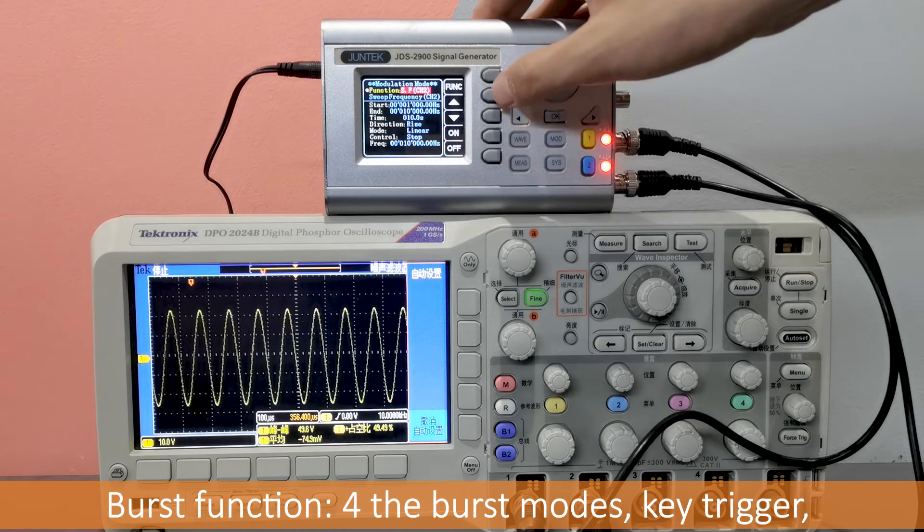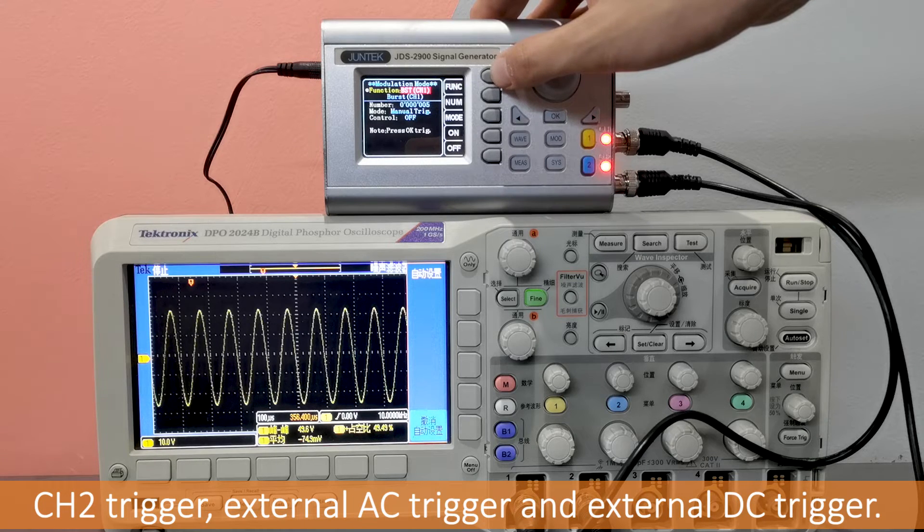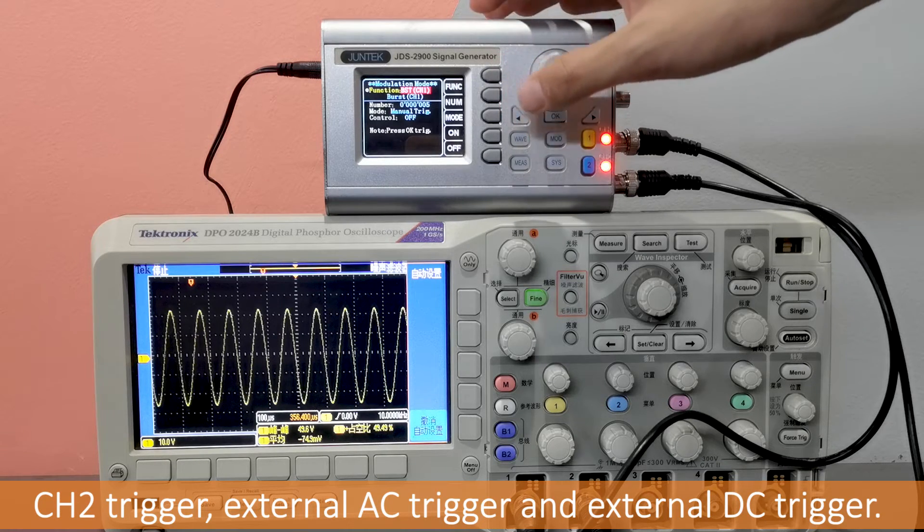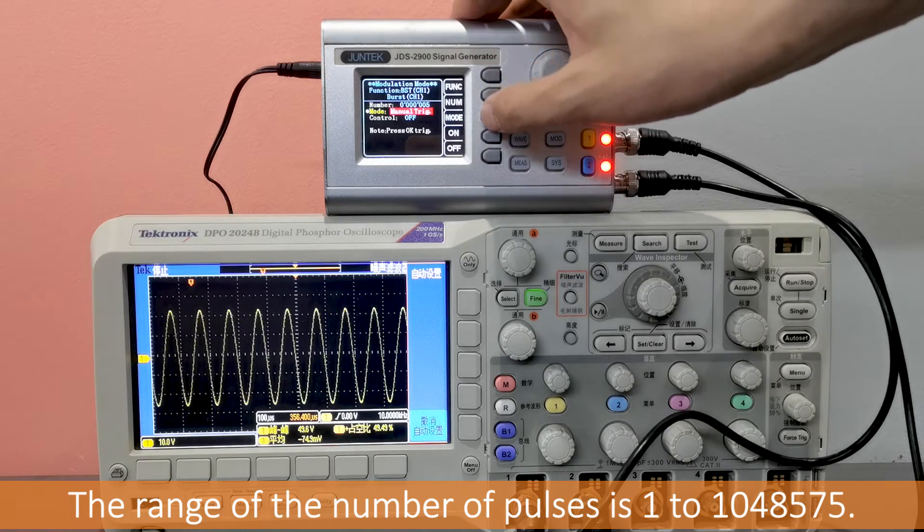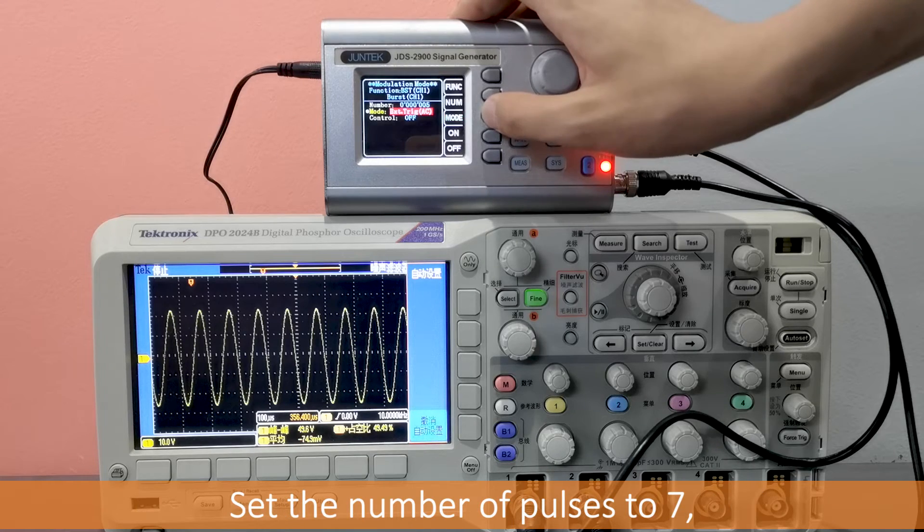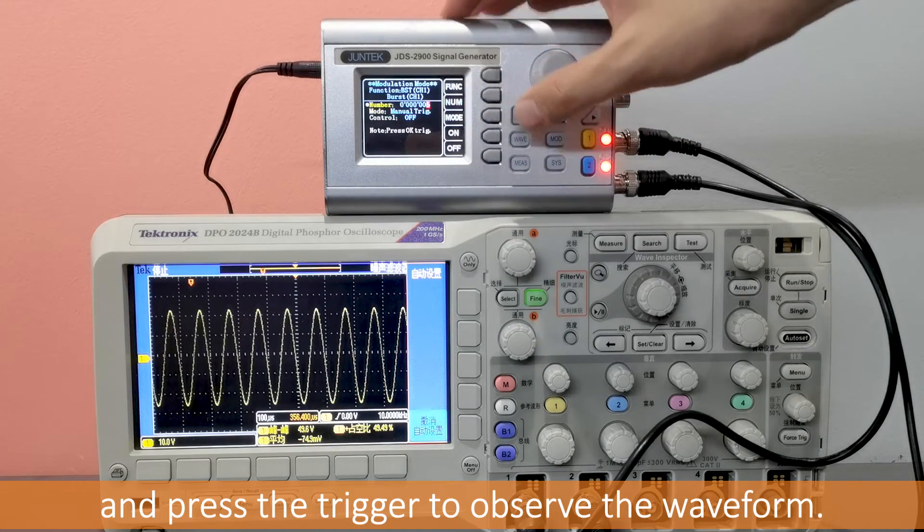Burst function. For the burst modes: key trigger, CH2 trigger, external AC trigger and external DC trigger. The range of the number of pulses is 1 to 1,048,575. Set the number of pulses to 7, and press the trigger to observe the waveform.